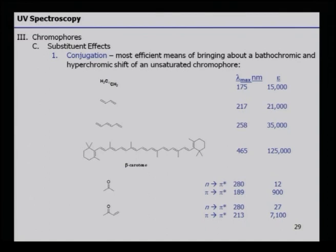In simple acetone, the n to pi* is at 280 nm and pi to pi* is at 180 nm, with very low molar absorptivities. Whereas, if an alkene is conjugated to the carbonyl, the values change quite significantly — the n to pi* remains similar but pi to pi* has increased from 189 to 213 nm and the molar absorptivity has gone up tremendously. That is the beauty of conjugation.